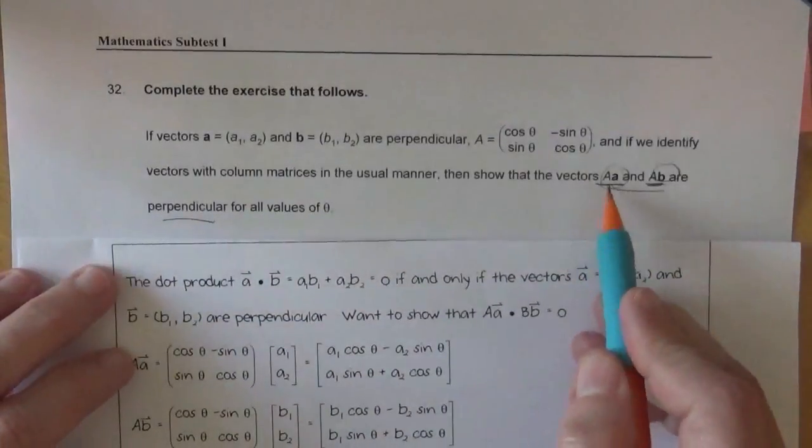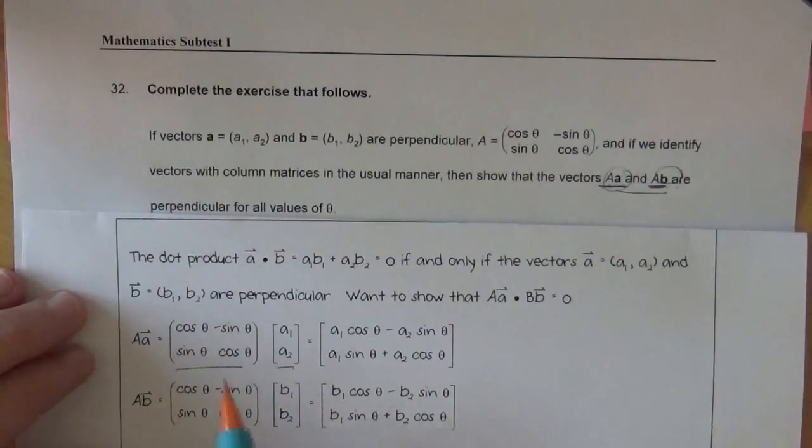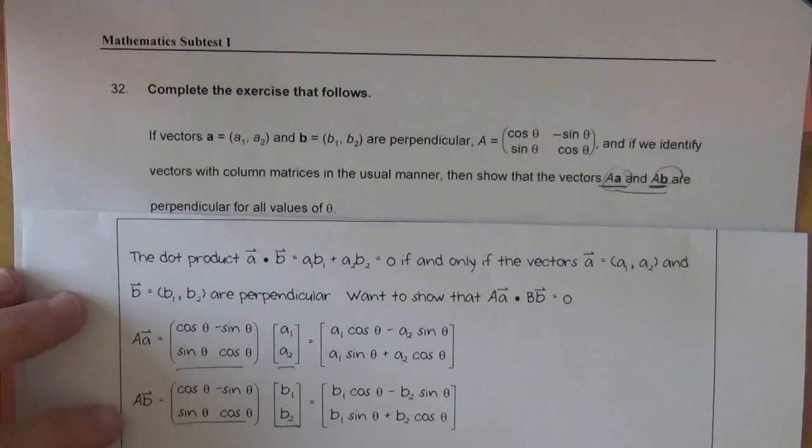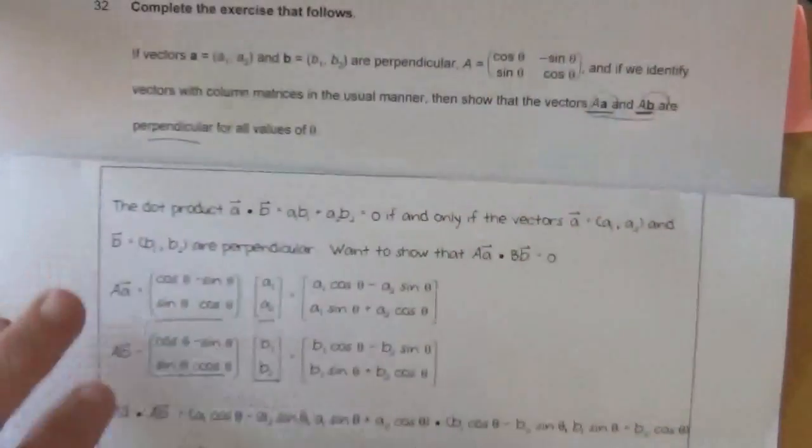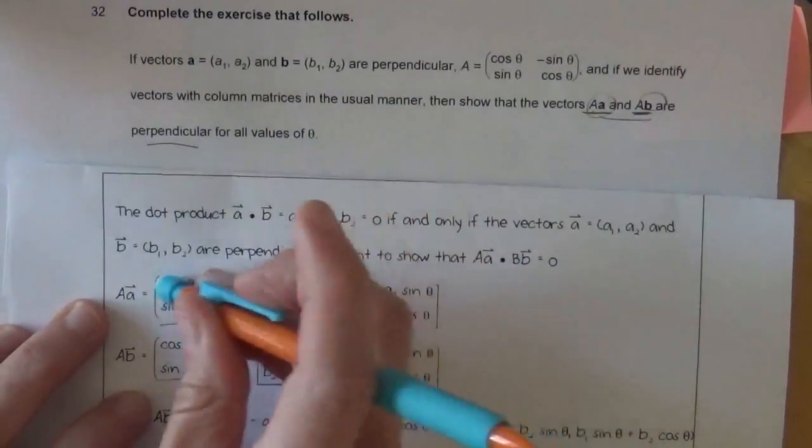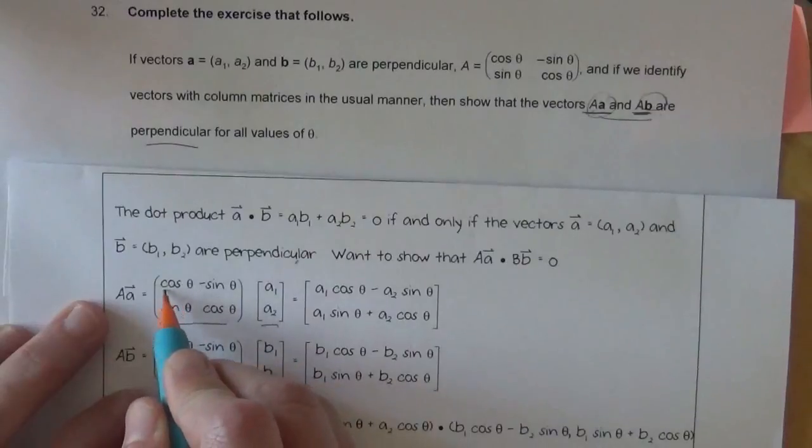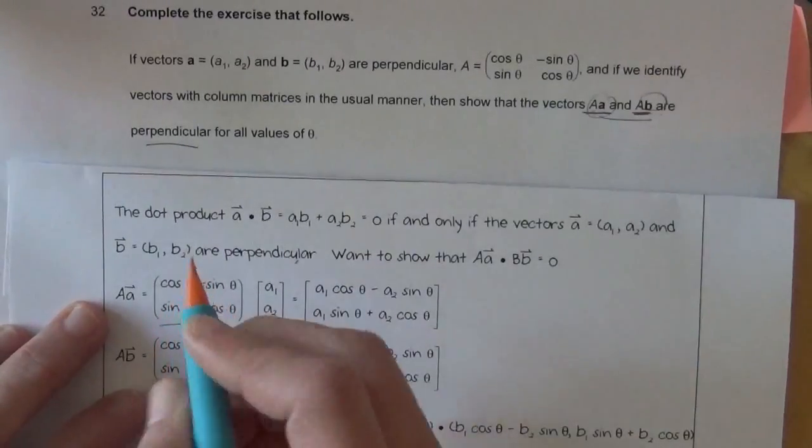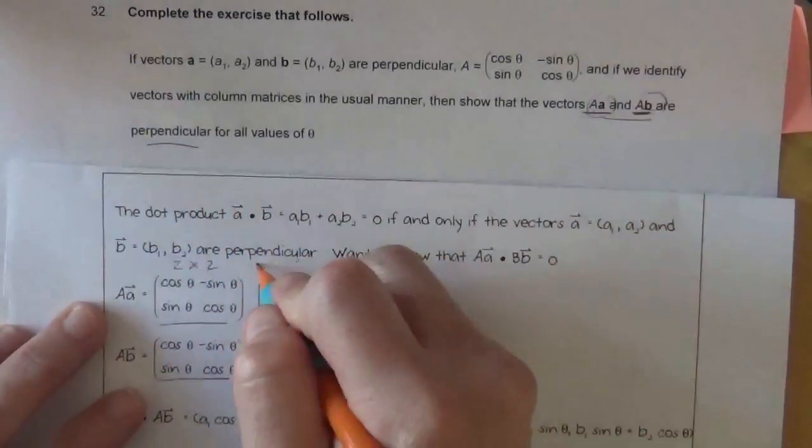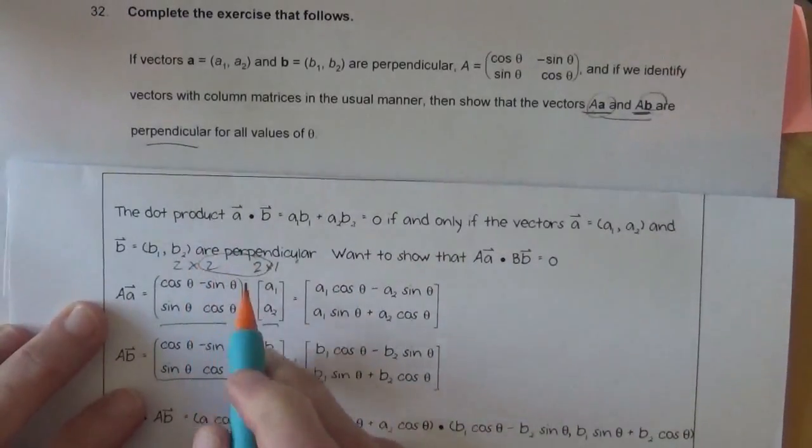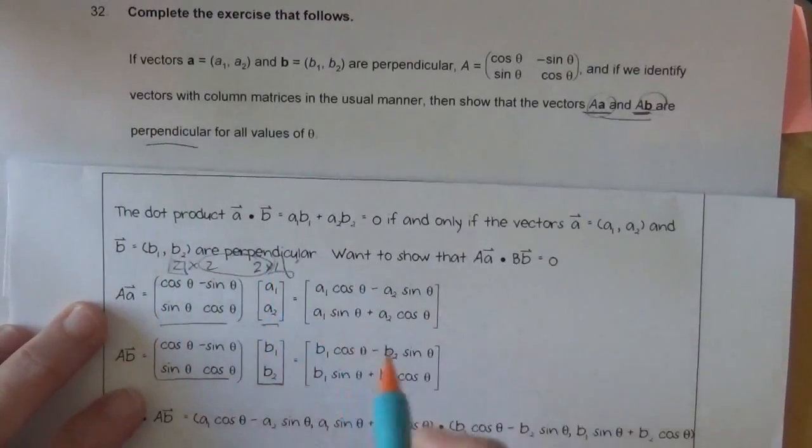To create the vectors, matrix A times A and matrix A times B are shown here. When we multiply matrices, you can do a little review of multiplying matrices. We just check to make sure it's possible. This is 2 cosine theta and minus sine theta, so this is a 2 by 2 matrix, 2 rows, 2 columns. This is 2 rows, 1 column. 2 times 1, so the middles do match, so this is possible.